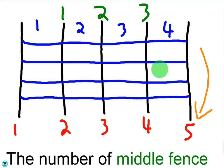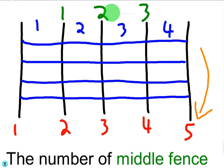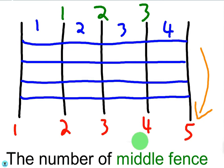Now what if we wanted to figure out how many integers are between one and five? Well take a look — it'd actually just be the middle fence posts, these numbers in green. So if we counted the middle fence posts not including the end posts, there would be three total posts in between, or three integers between one and five, namely two, three, and four. That adds up to three.